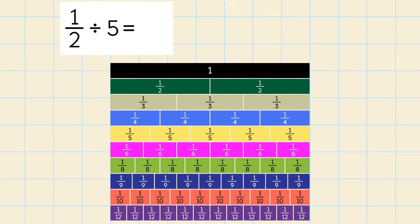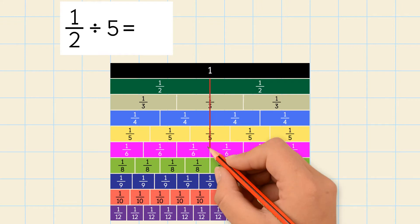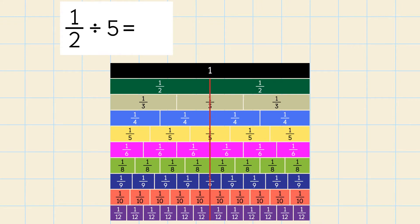Let's do another example. 1 half divided by 5. Place 1 half strip under a whole strip. Find 5 fraction strips that fit exactly under the 1 half strip. 5 tenths fit exactly under the 1 half strip. So the quotient is 1 tenth.